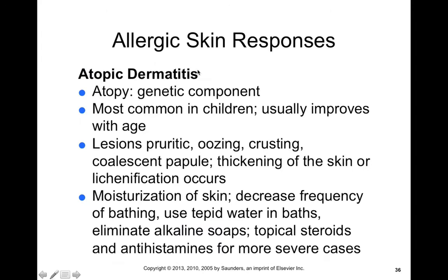Other allergic skin reactions include atopic dermatitis. Atopy has a genetic component — it typically runs in families, is more common in children, and improves with age. These lesions are itchy, oozing, crusting, and they might cause a thickening of skin called lichenification. Moisturization helps, as does decreasing the frequency of bathing so your skin doesn't get dry, using tepid water baths so you don't wash off too much skin oils, and eliminating alkaline soaps. Topical steroids and antihistamines can also be used to limit the itchiness.